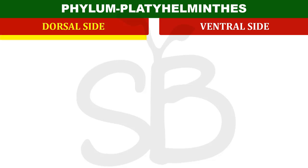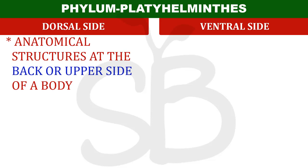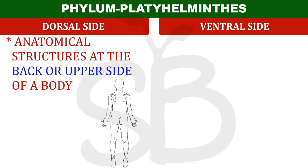They are dorsal side and ventral side. What is dorsal side? Dorsal side means back - one organism's back portion, which is the dorsal side. For humans, the dorsal side is the back portion.